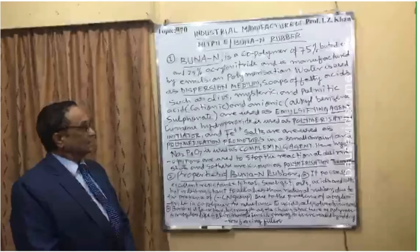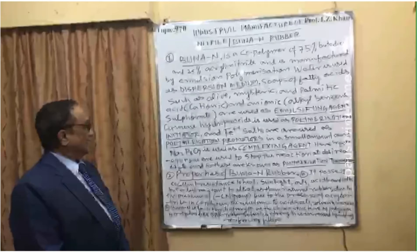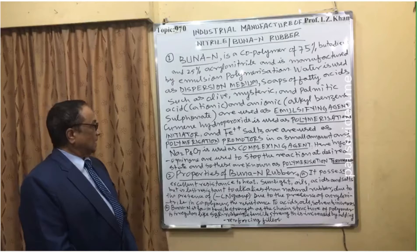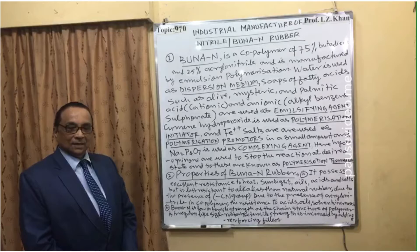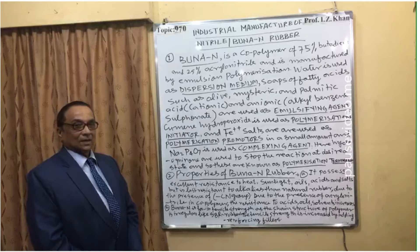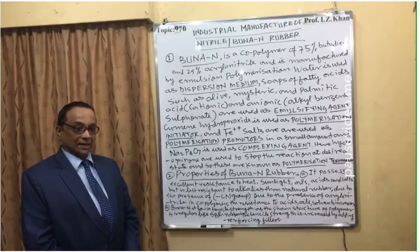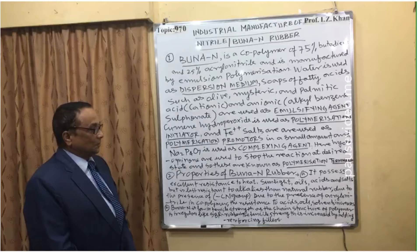Iron — that is Fe²⁺ salts — are used as polymerization promoters in small amounts. Na₂P₄O₇ is used as a complexing agent. Hydroquinone is used to stop the reaction at the desired point, and is therefore called the polymerization terminator.